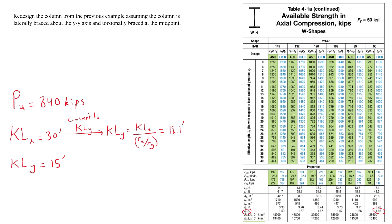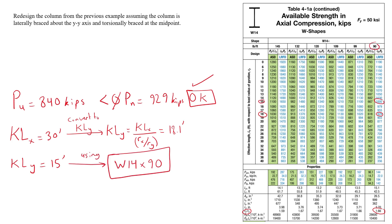Using 18 feet as the effective length, the lightest section with a compressive strength higher than 840 kips is W14×90. We can also verify that the strength exceeds 840 kips about the y-axis by using 15 feet in the table as the effective length.